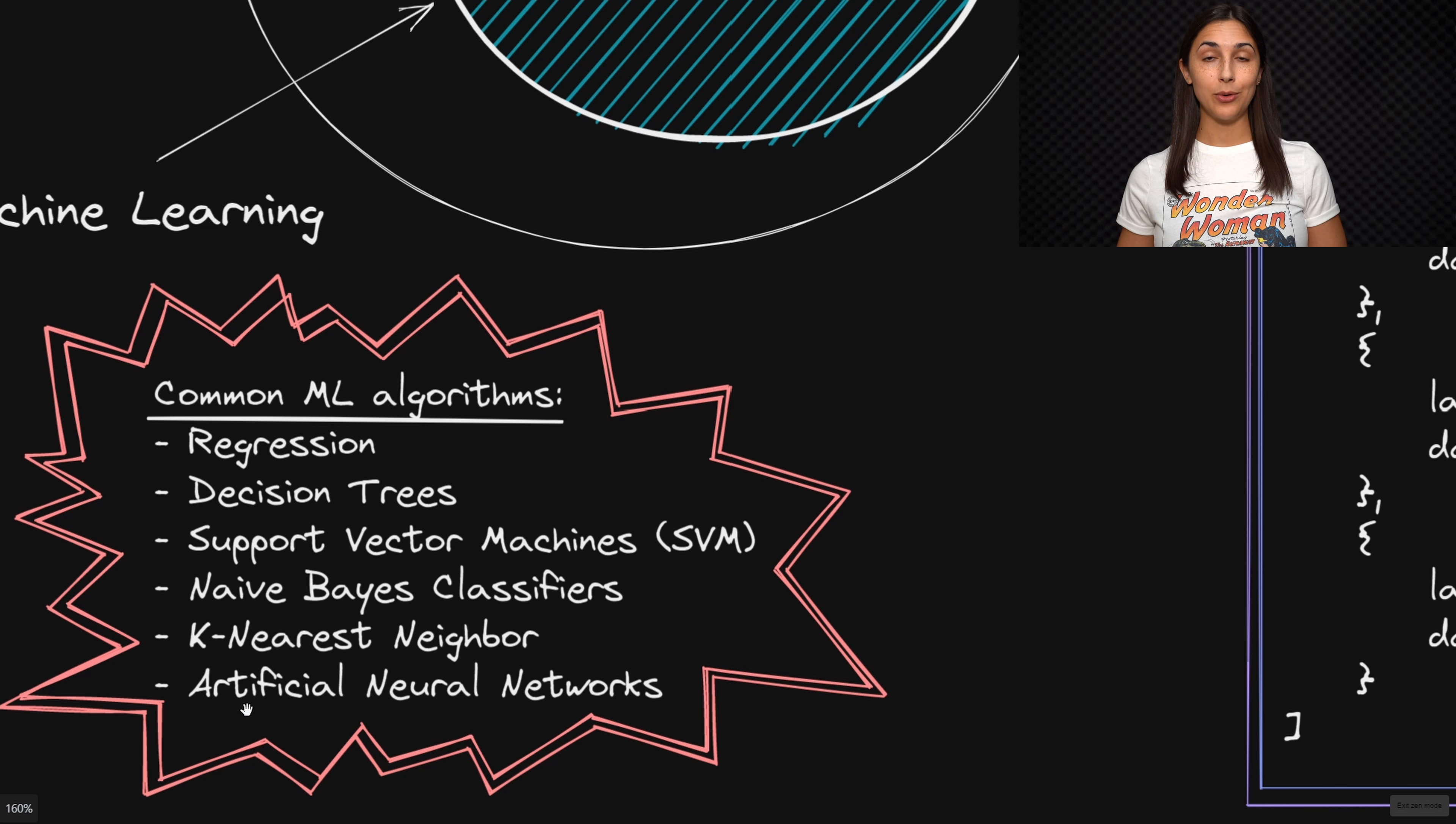Now actually, artificial neural networks fall into the sub category of machine learning called deep learning, and we'll be focusing on artificial neural networks a lot in this series.